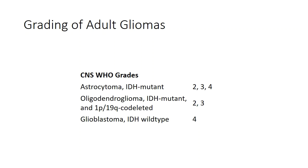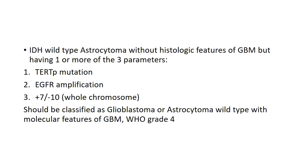Moving on to adult glioma grading: adult gliomas can be astrocytoma IDH mutant (WHO grade 2, 3, or 4), oligodendroglioma IDH mutant 1p19q co-deleted (WHO grade 2 or 3), or glioblastoma IDH wild-type (WHO grade 4). IDH wild-type astrocytoma without histological features of GBM, but having one or more of: TERT promoter mutation, EGFR amplification, or gain of chromosome 7/loss of chromosome 10, should be classified as glioblastoma IDH wild-type, WHO grade 4.